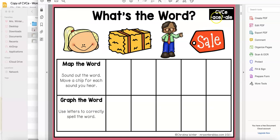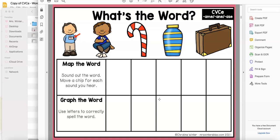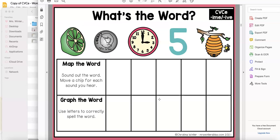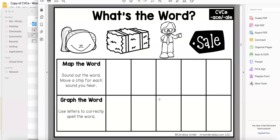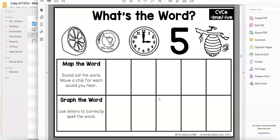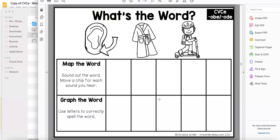So here we have the A, long A words with the silent E. So face. So students would write F and then A and then CE here. Oops, they would map the word and then they would graph the word. So there are different work boards, colors, color and black and white if you like to keep it ink friendly.